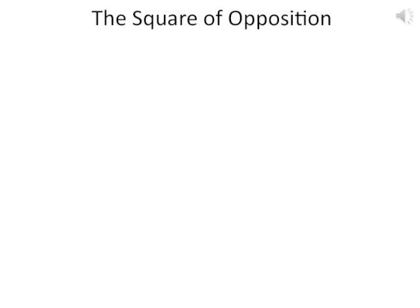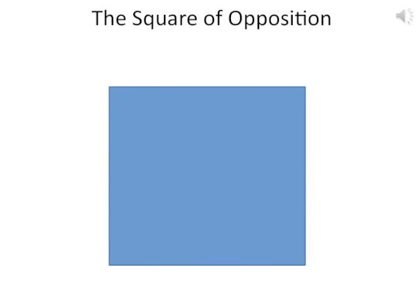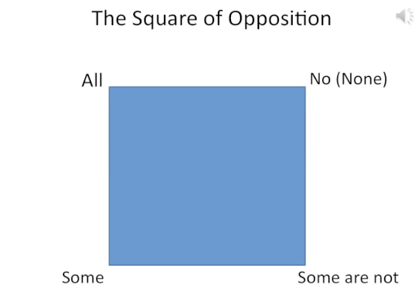On the corners of the square, you will have the quantifiers. The four quantifiers in a categorical syllogism are: all, no or none, some, and some are not. There are only ever four quantifiers in a categorical syllogism. If you've got something else, there's something wrong.